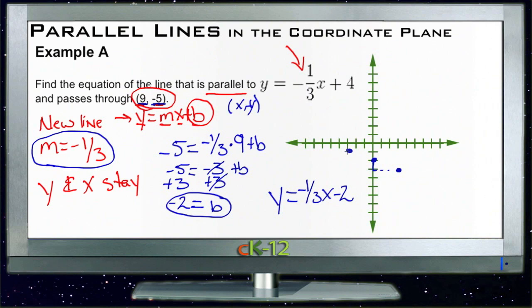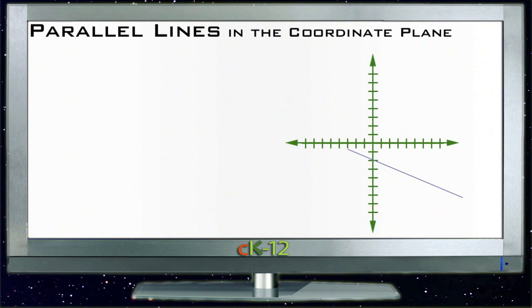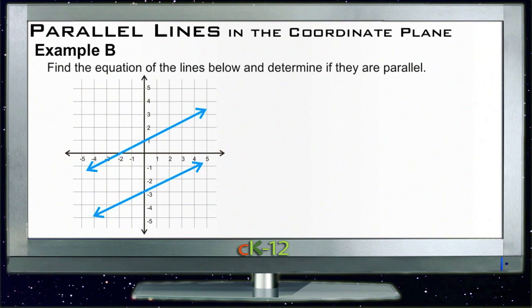Let's take a look at Example B. Example B says find the equation of the lines below and determine if they are parallel. To find the equation of the lines, we need to find our Y equals MX plus B form and identify the M and the B.